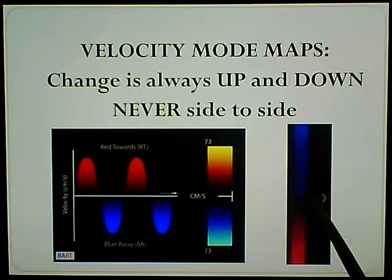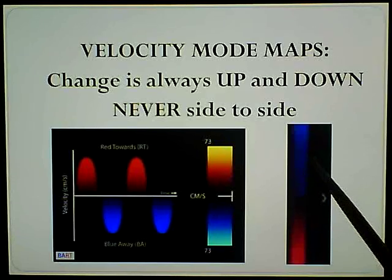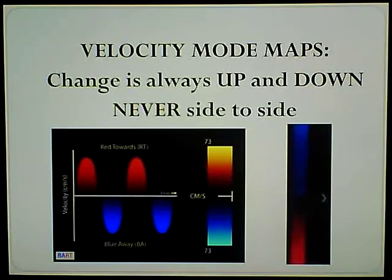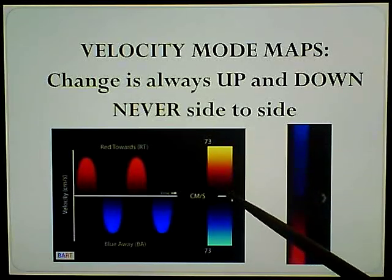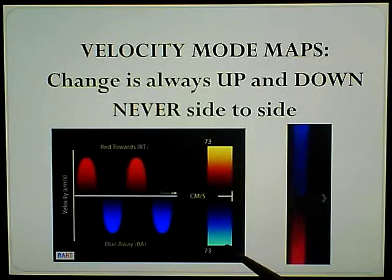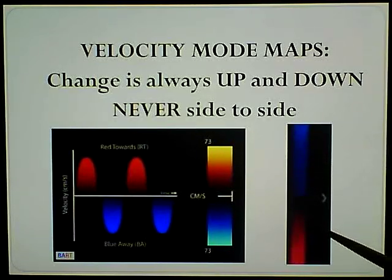Now you have this map over here. You have blue above, red below. So the blue is towards the transducer, the red is now away from the transducer. Notice that this is just solid blue, this is solid red. You have multiple reds to yellow, multiple blues to light blue - sometimes you see almost a green. If it's just blue or just red, it is simply just direction.